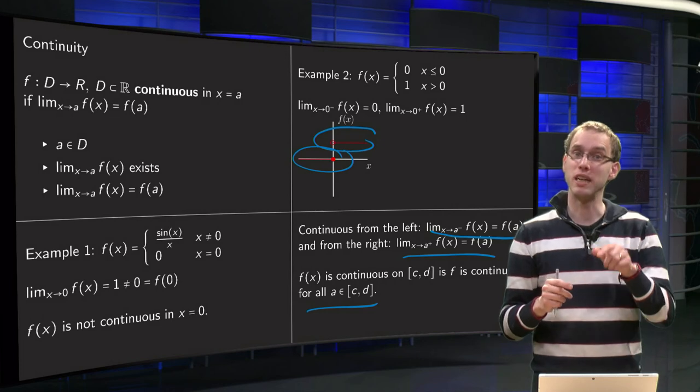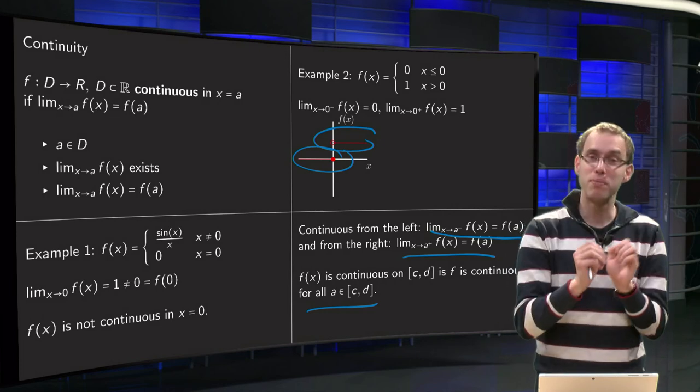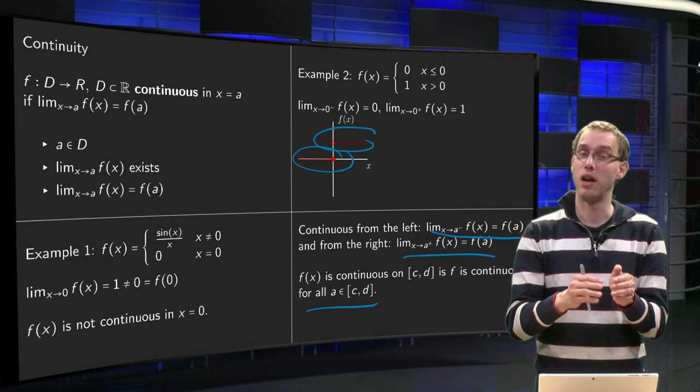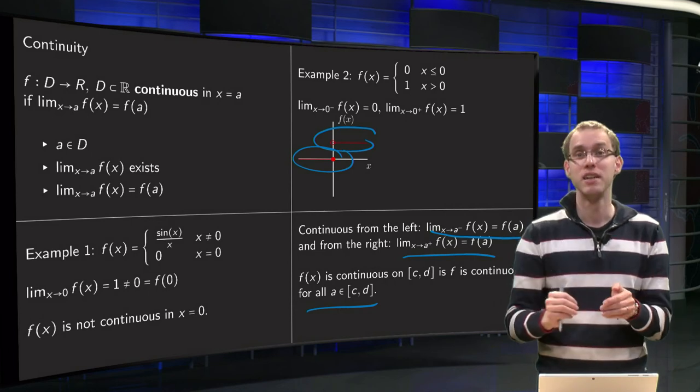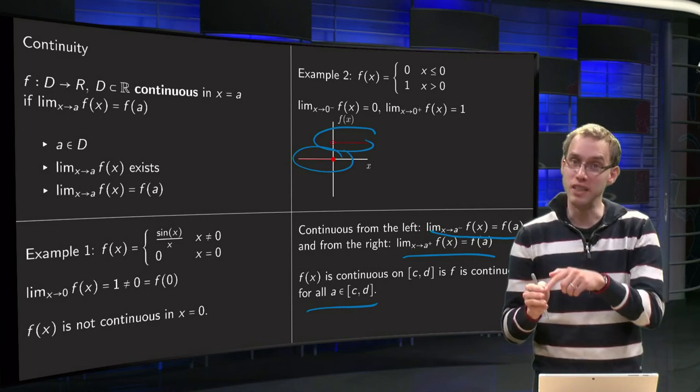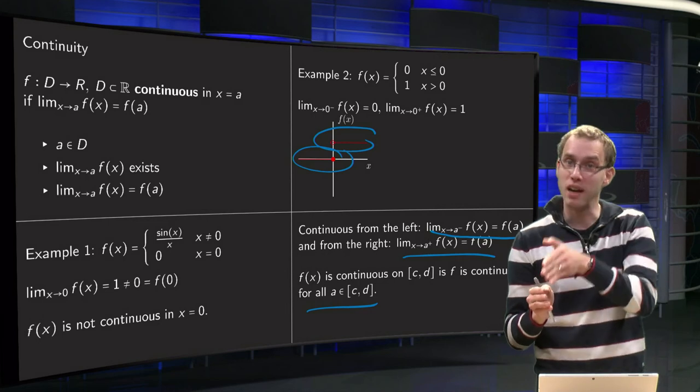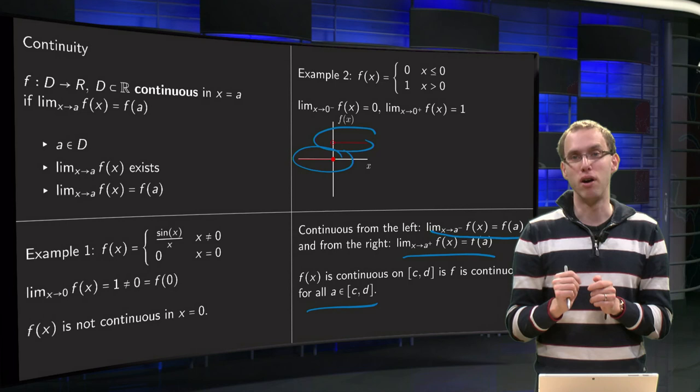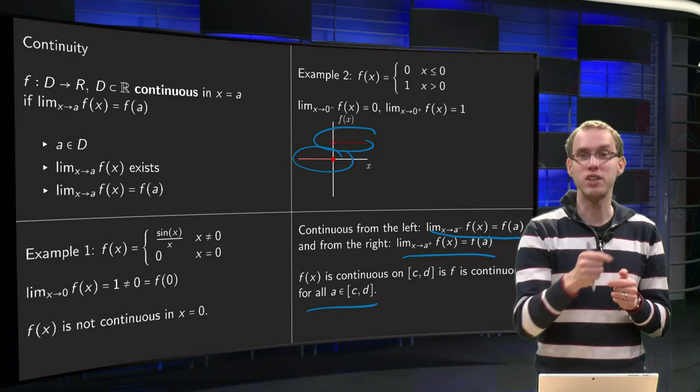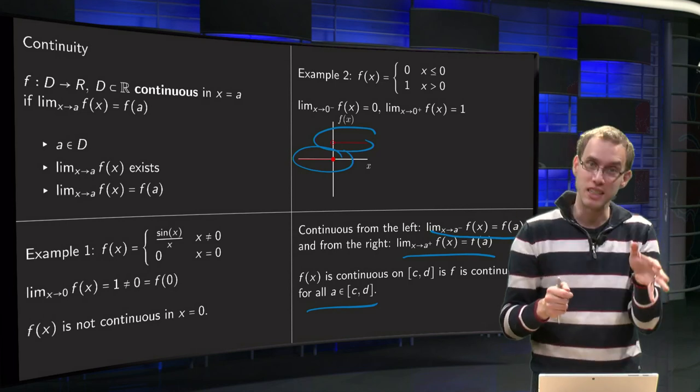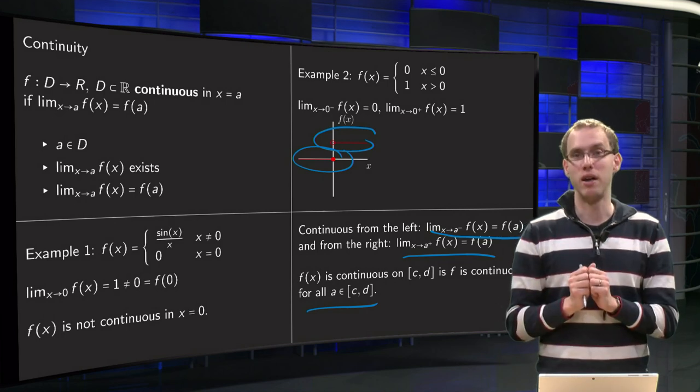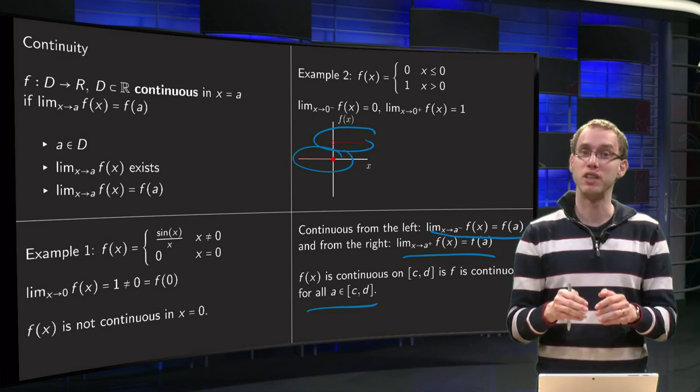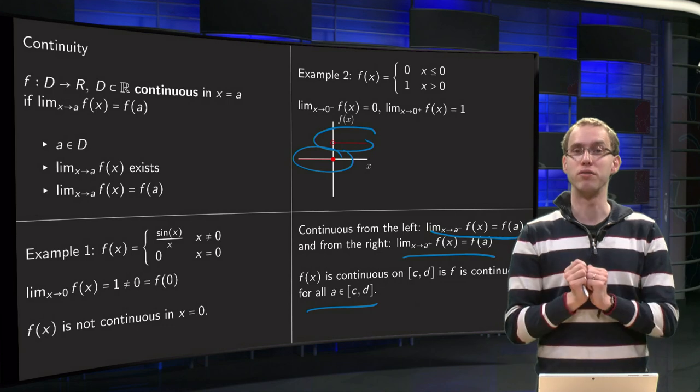Continuity at c, the left boundary point, is understood as continuity from the right, and continuity at point d is understood as being continuous from the left. Because obviously when you are on the boundaries of the interval you can come only from one side to your limit because the function doesn't exist on the other side. So that is what it means if a function f is continuous on an interval.